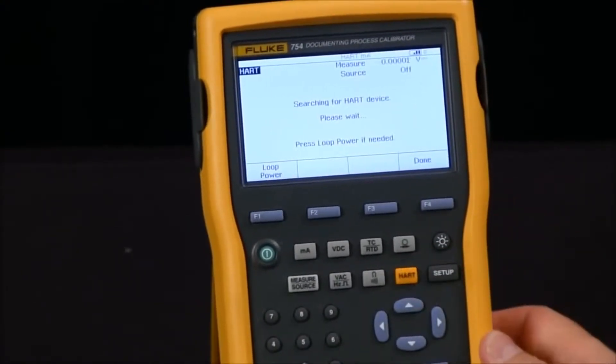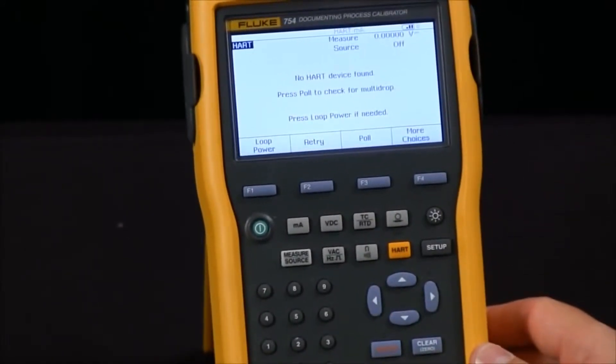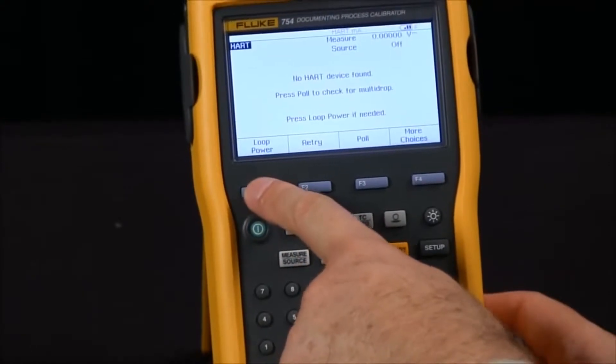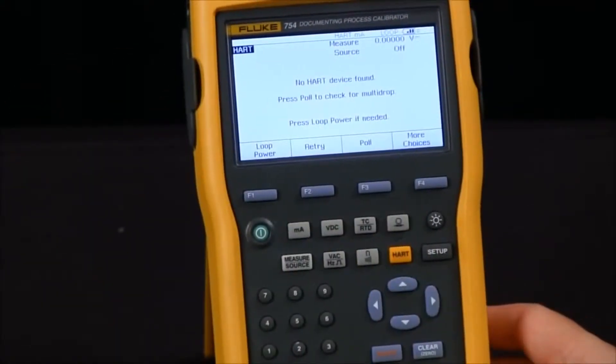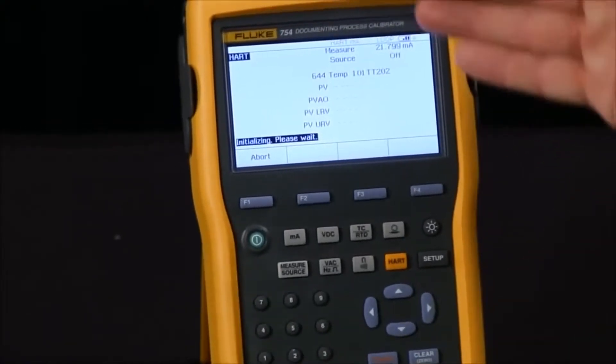You see I'm expecting an error message because it went out there and says searching for HART device and none found, but it does give me an option on the F1 key to turn on loop power. I will do that and then once again it will go out and look for the HART device and we'll see that it has found.